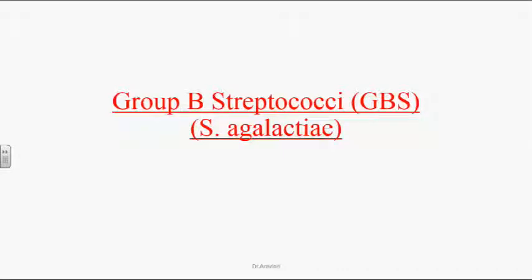Group B Streptococci, also called GBS. The only organism pathogenic to humans in this group is Streptococcus agalactiae.